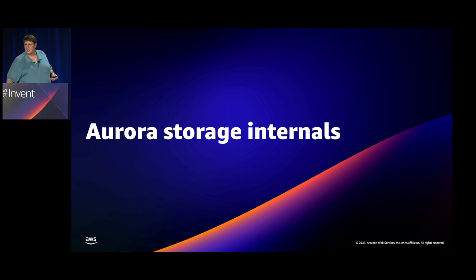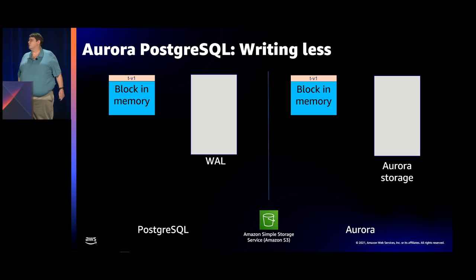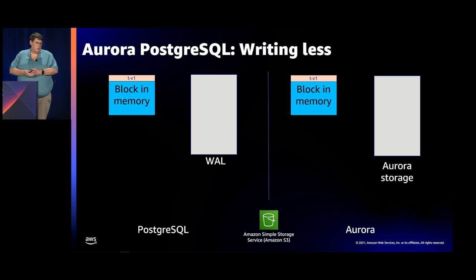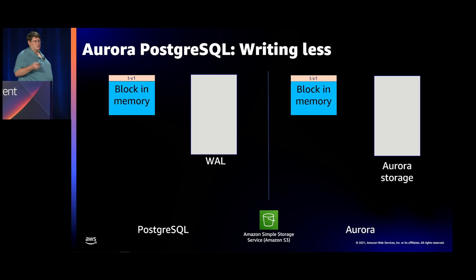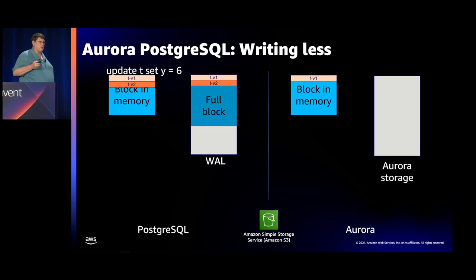Why do we claim better throughput than regular Postgres or MySQL? Largely because we have scale-out storage and we do less work. In a classic Postgres example: I've got a block in memory and my write-ahead log. I do UPDATE T SET Y = 6. We put a copy of that image into the log, plus a full copy of the data page into the log — I'll explain why in a moment.